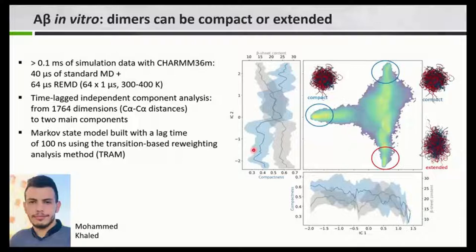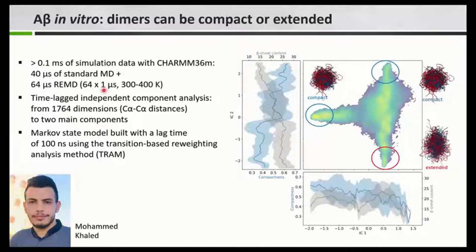Here are the results for the A-beta dimers. We first performed 40 microseconds of standard MD simulations, then saw one transition sampled only once. After trying several times to get more statistics without success, we decided to switch to enhanced sampling — specifically replica exchange molecular dynamics simulation. We run 64 replicas in parallel, each for one microsecond. In replica exchange, there is the possibility to exchange either temperatures or conformations. At high temperatures, the system can overcome energy barriers and reach new regions of phase space, then the temperature goes down and it reaches the minimum after transitions.